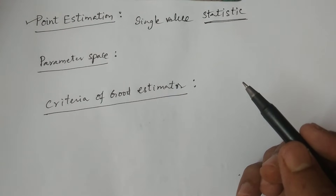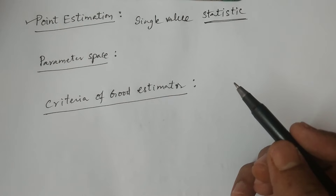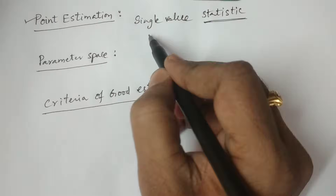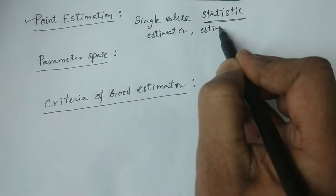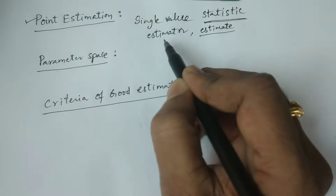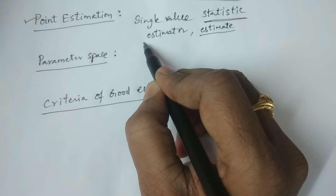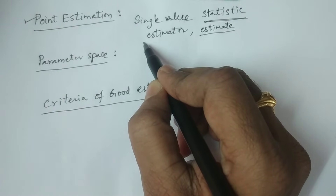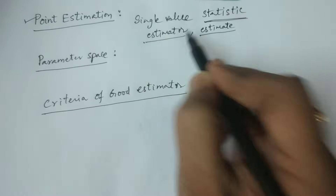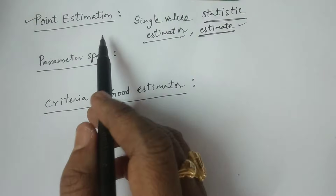Whatever single value is going to be used to estimate the population parameter is called an estimator. And the value of the estimator is known as an estimate. These are two important terminologies: estimator and estimate. The function of sample observations is known as a statistic, and it is used to estimate the population parameter — that is called the estimator. The value of the estimator is known as the estimate.